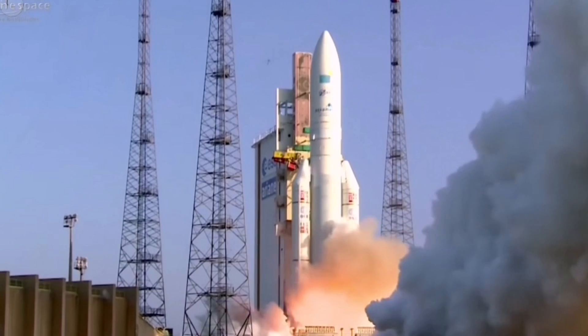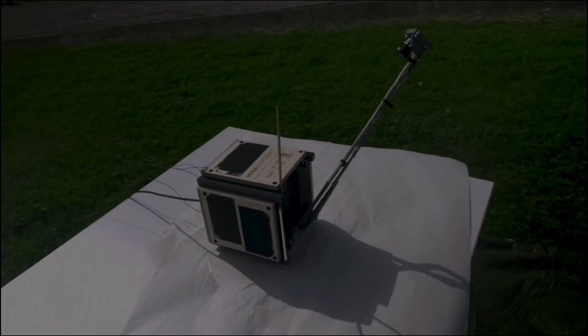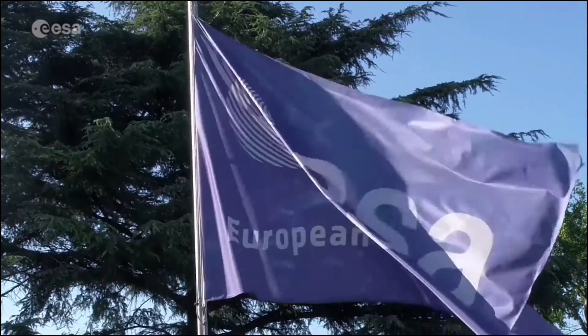Most satellites these days are made of aluminum and titanium. But what if we send a satellite made of wood planks? At first, it seems like a crazy idea, but not for European Space Agency.